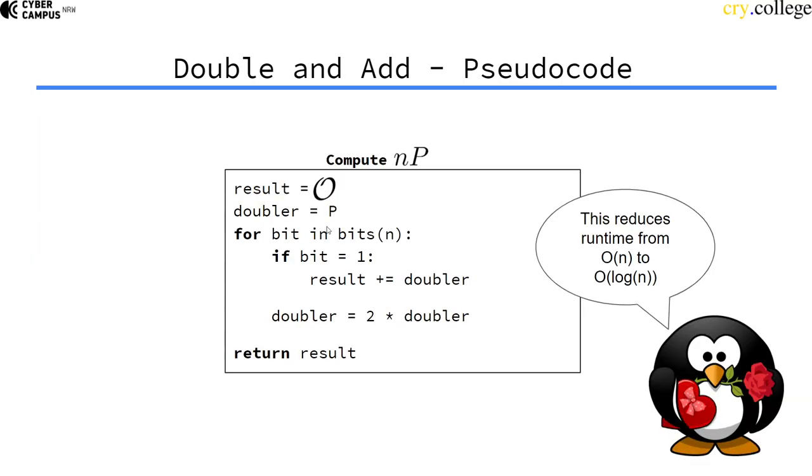This is the finished algorithm. We're going through the bits of the scalar and if the bit is set we add the doubled value to the result. Otherwise we double our double value. This reduces the runtime from n to log n and that is of course computable even for huge numbers.